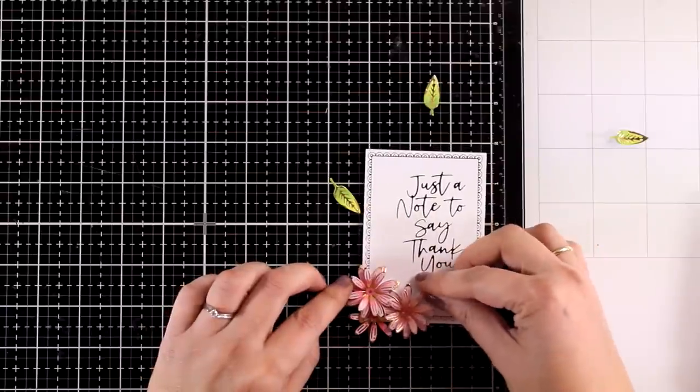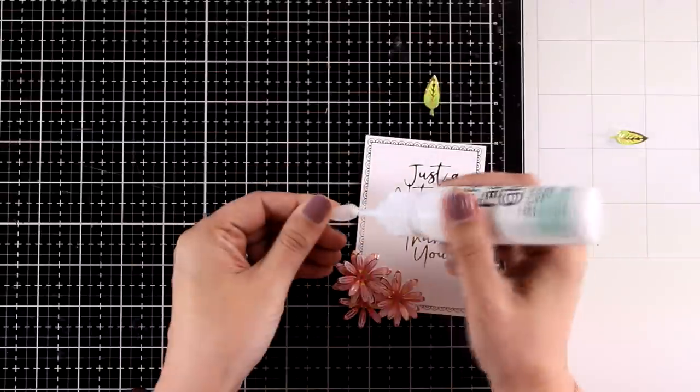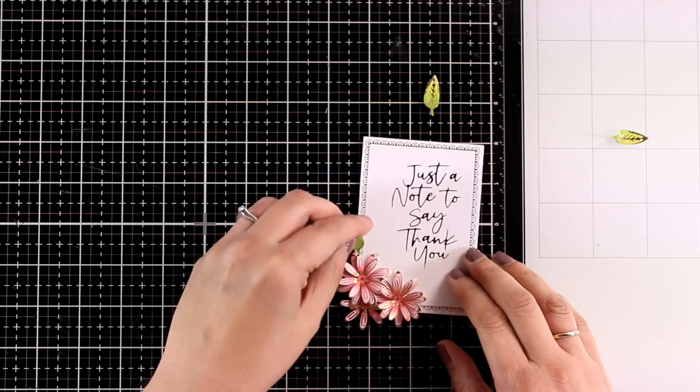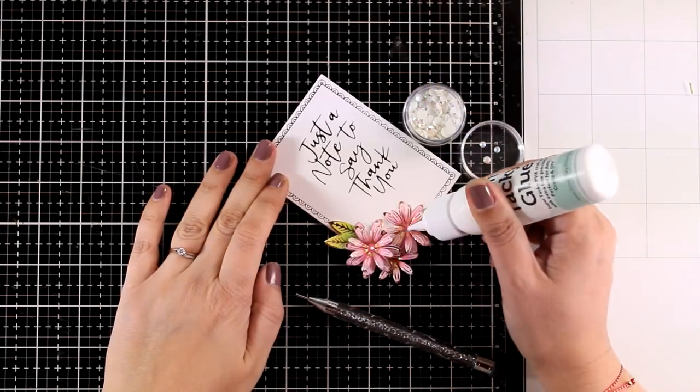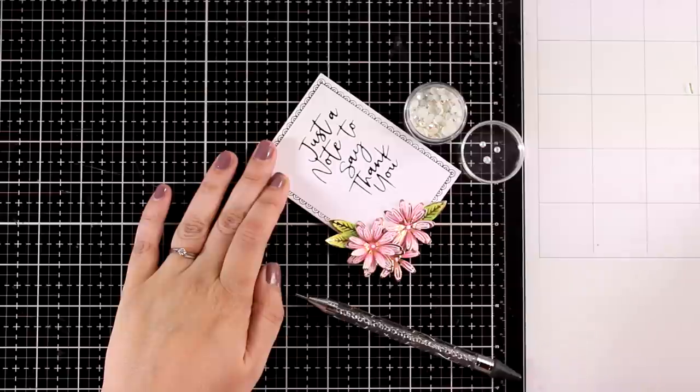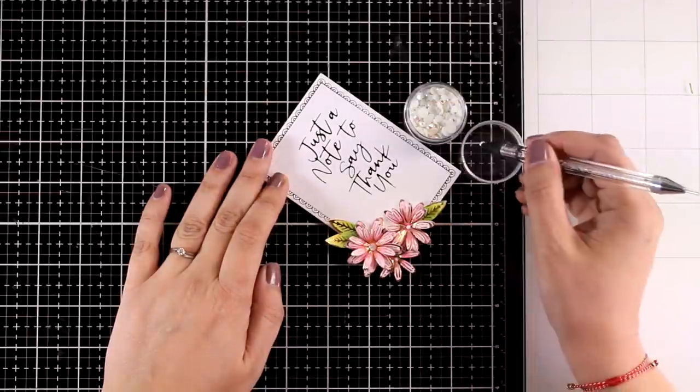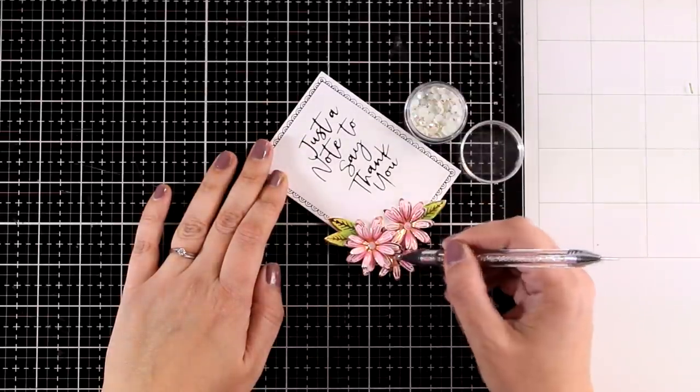I did go with three flowers and three leaves just because we all love odd numbers. At the center of the flowers I am going to add some gems and you can go with pearls at the center as well, they would look lovely.